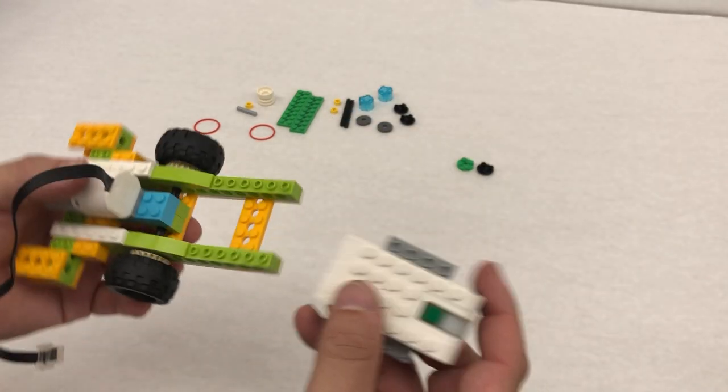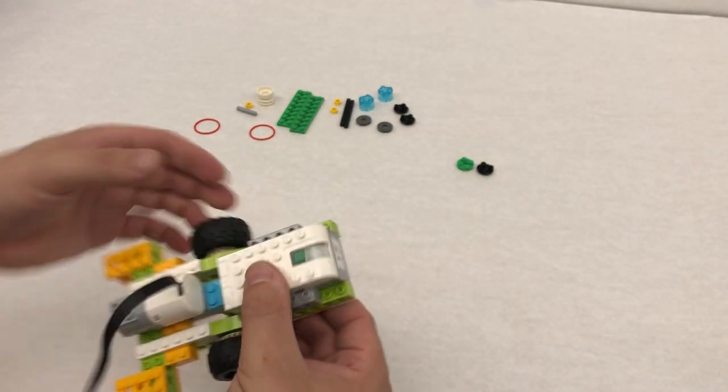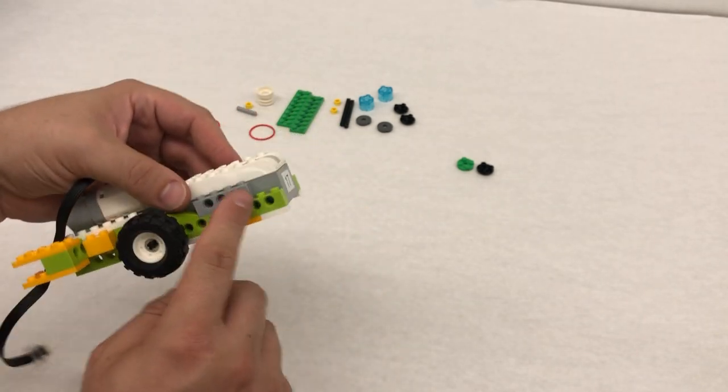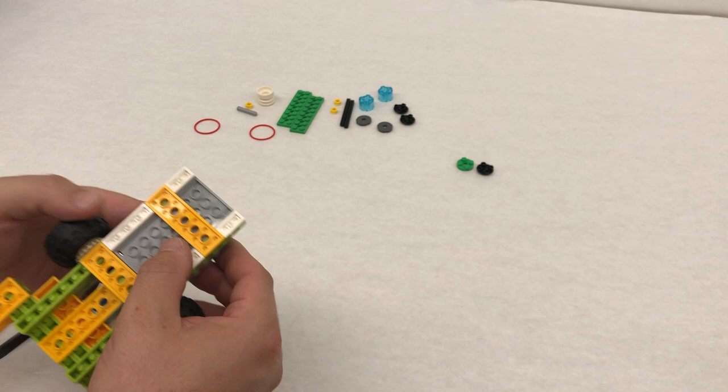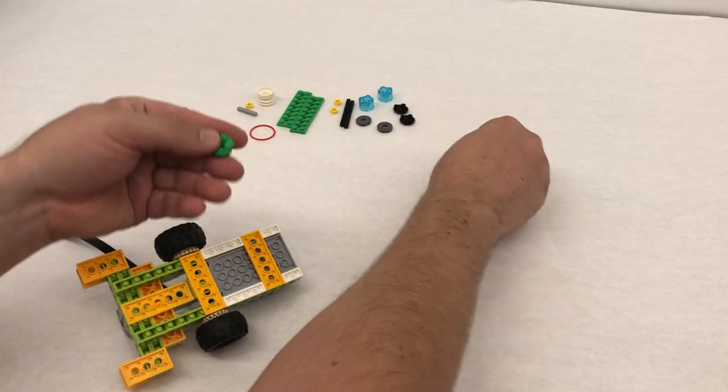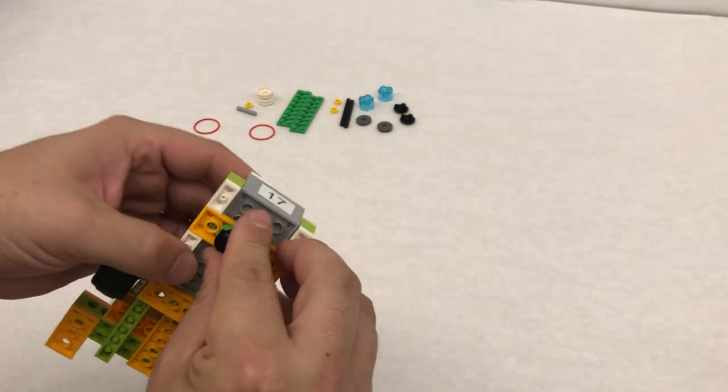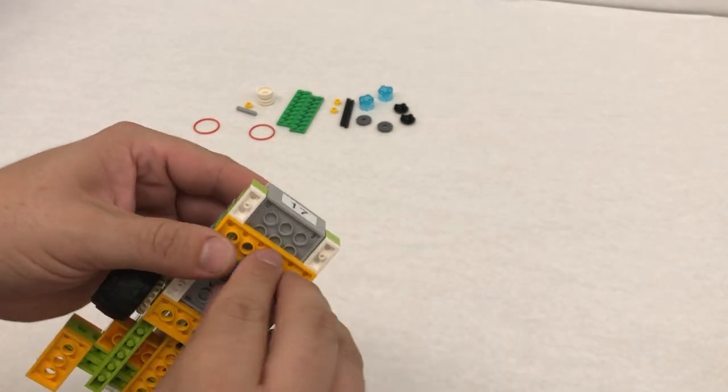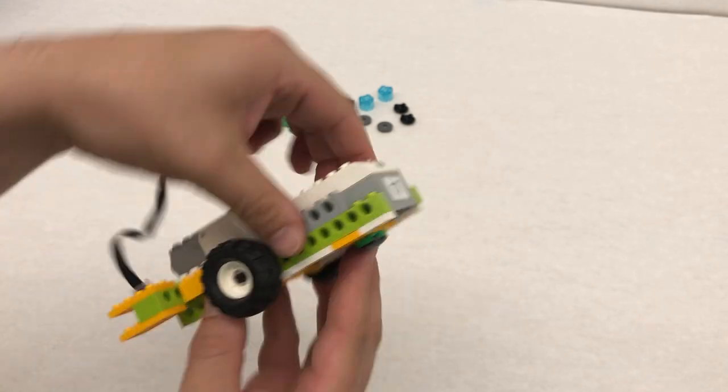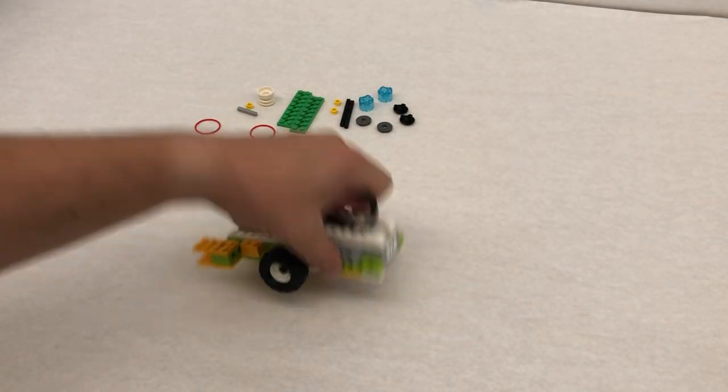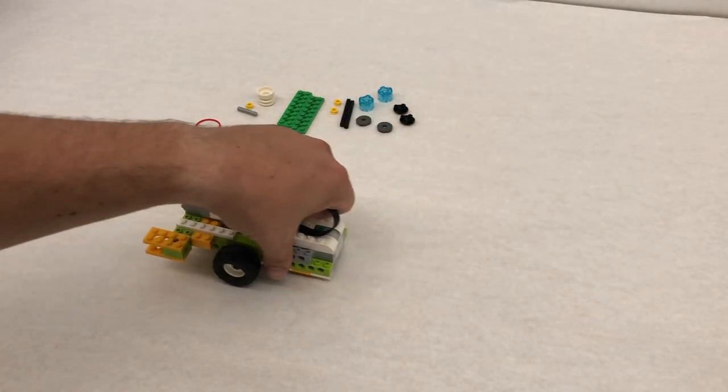Okay we're gonna take our hub and we're gonna snap our hub in just on top like that. Okay underneath we are going to take this green circle and this black one like this and then put it right in the middle right here. That gives it kind of like a little thing for the friction so it will drive across.